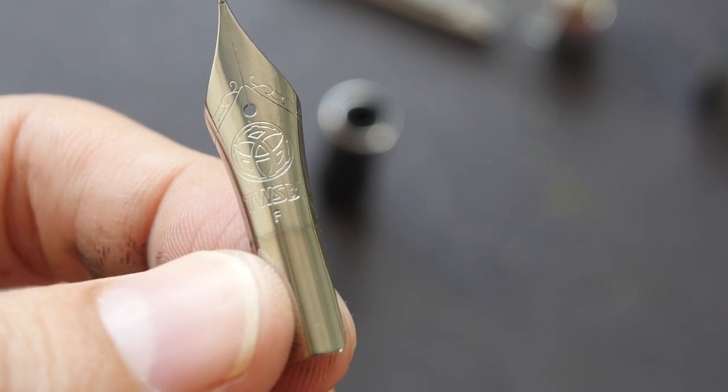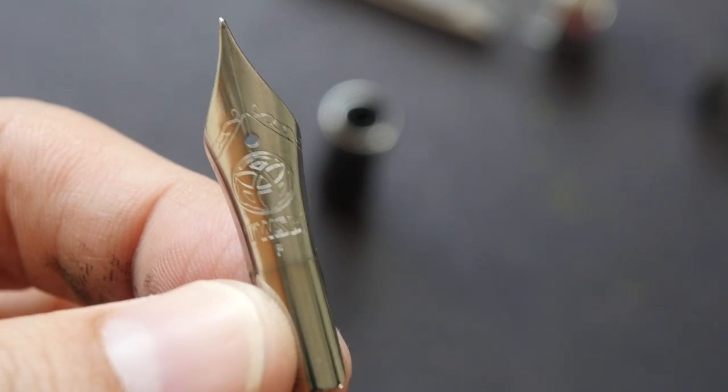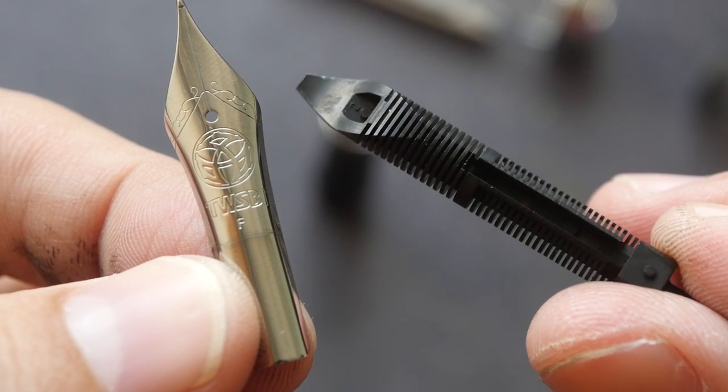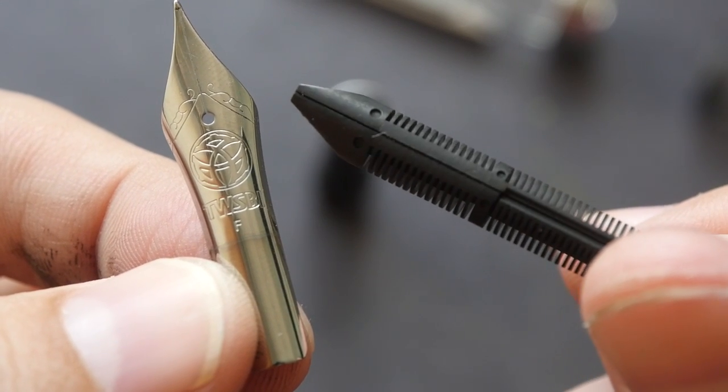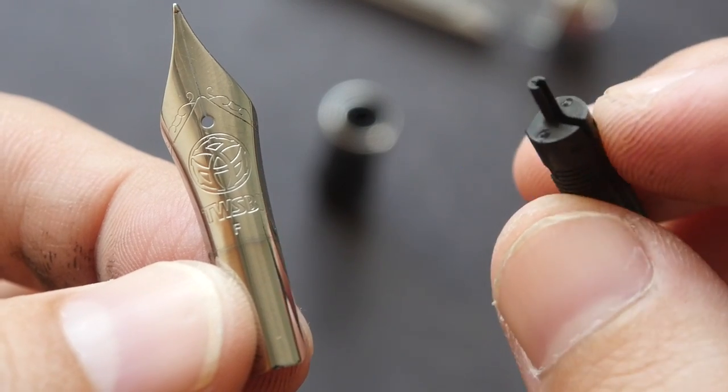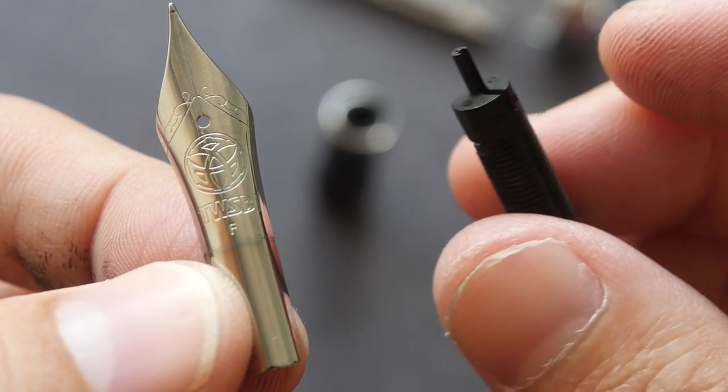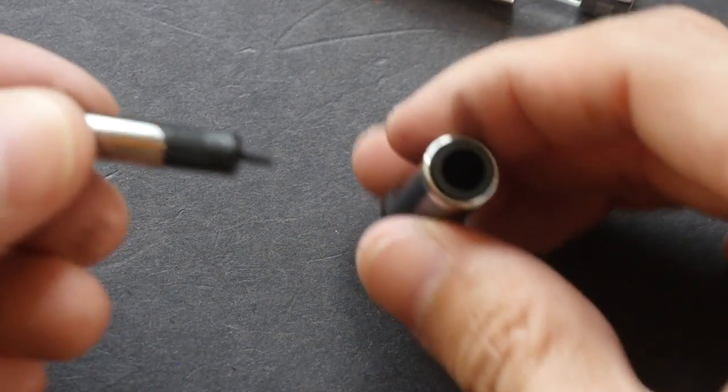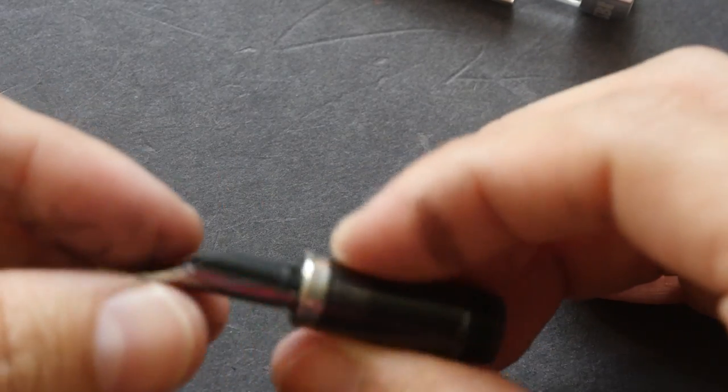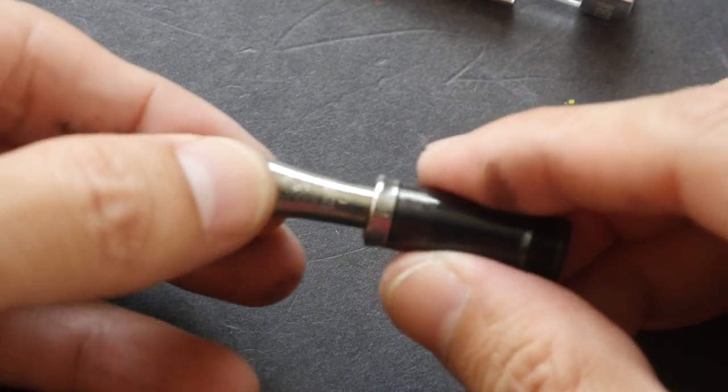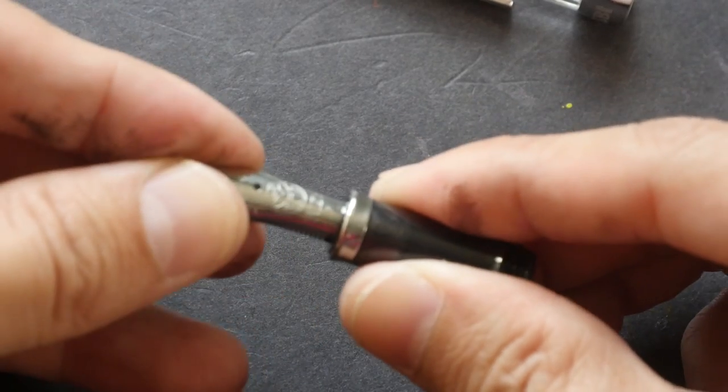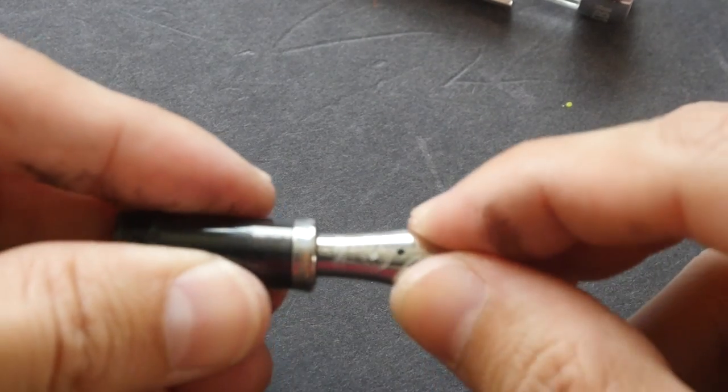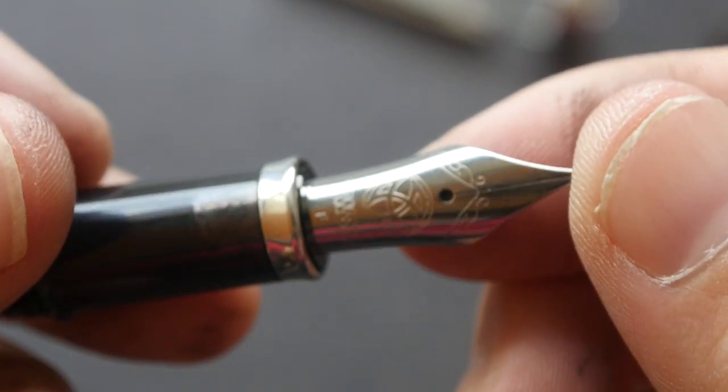This is a rather large nib. The one that I have is a fine, and this is how the nib looks like. It's very easy to assemble the nib and fit back into the grip section. Just make sure that it aligns properly and you can just push it in. So the nib actually extends out by quite a bit. So this is how it looks like when it's assembled.